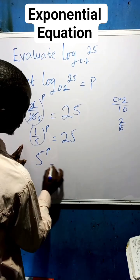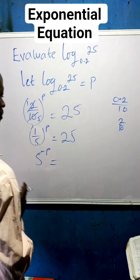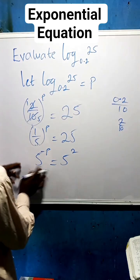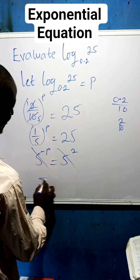Hope you're getting it. Can you also write 25? We now have 5 to the power of 2. Remember we are having the same base. Since we have the same base and even power, we can equate the powers.